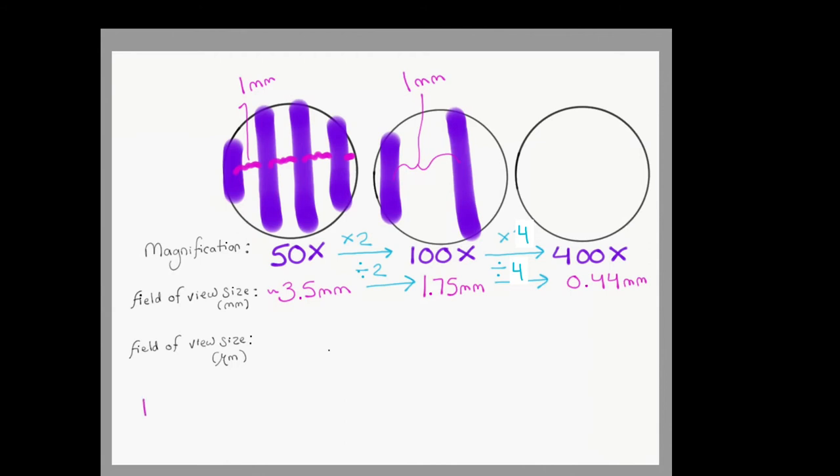Now we're going to convert our measurements into a more useful unit for microscope work, which is the micrometer. One millimeter is equivalent to a thousand micrometers. By multiplying the field of view size or diameter for each magnification by a conversion factor for millimeters to micrometers, you can calculate the field of view diameter in micrometers. In the case of low power, it would be 3500 micrometers. So just repeat that for the other two magnifications again, using the same conversion factor. That gives us a field diameter of 1750 micrometers for medium power and 440 micrometers for high power.